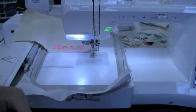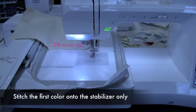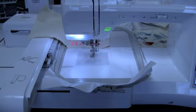The first color to stitch out in the reed design is actually a placement line. You'll simply stitch this onto your stabilizer. And once it's finished, we're going to lay down our canvas panel.